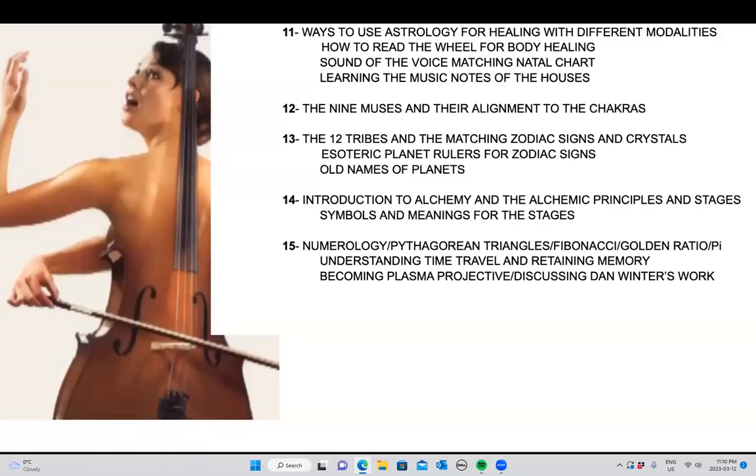Hi, everyone. Welcome to the intro for class 11, which is going to be about ways to use astrology for healing with different modalities, how to read the wheel for body healing, sound of the voice matching your own natal chart. So your voice matches your natal chart, which is really esoteric knowledge, and I'll help you understand how to balance your own instrument. We are live instruments, and we have to understand what notes we are missing through our natal wheel. Learning the music notes of the houses. Once you understand that every house has a music note, this all ties into Pythagorean Circle of the Fifths.